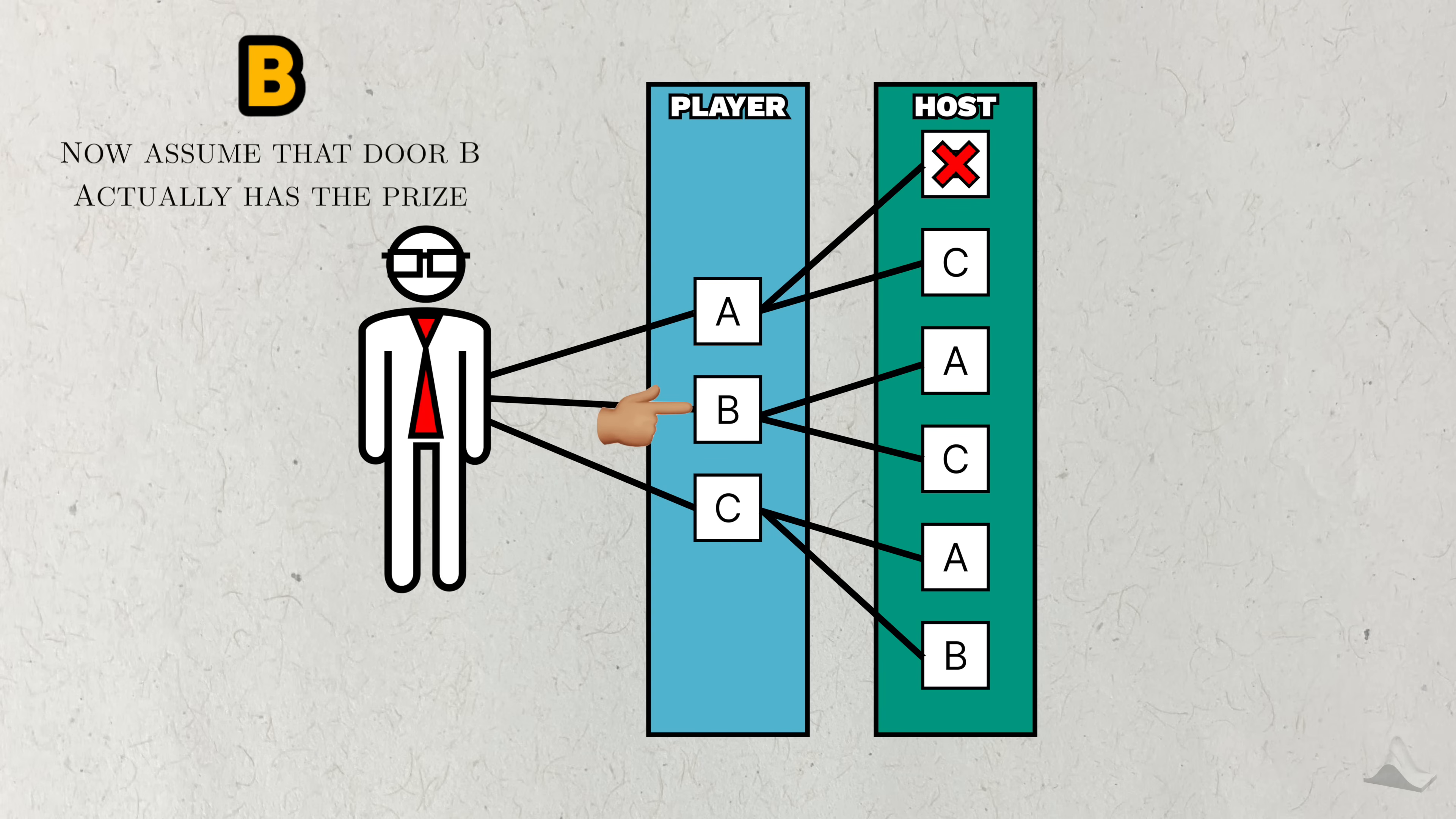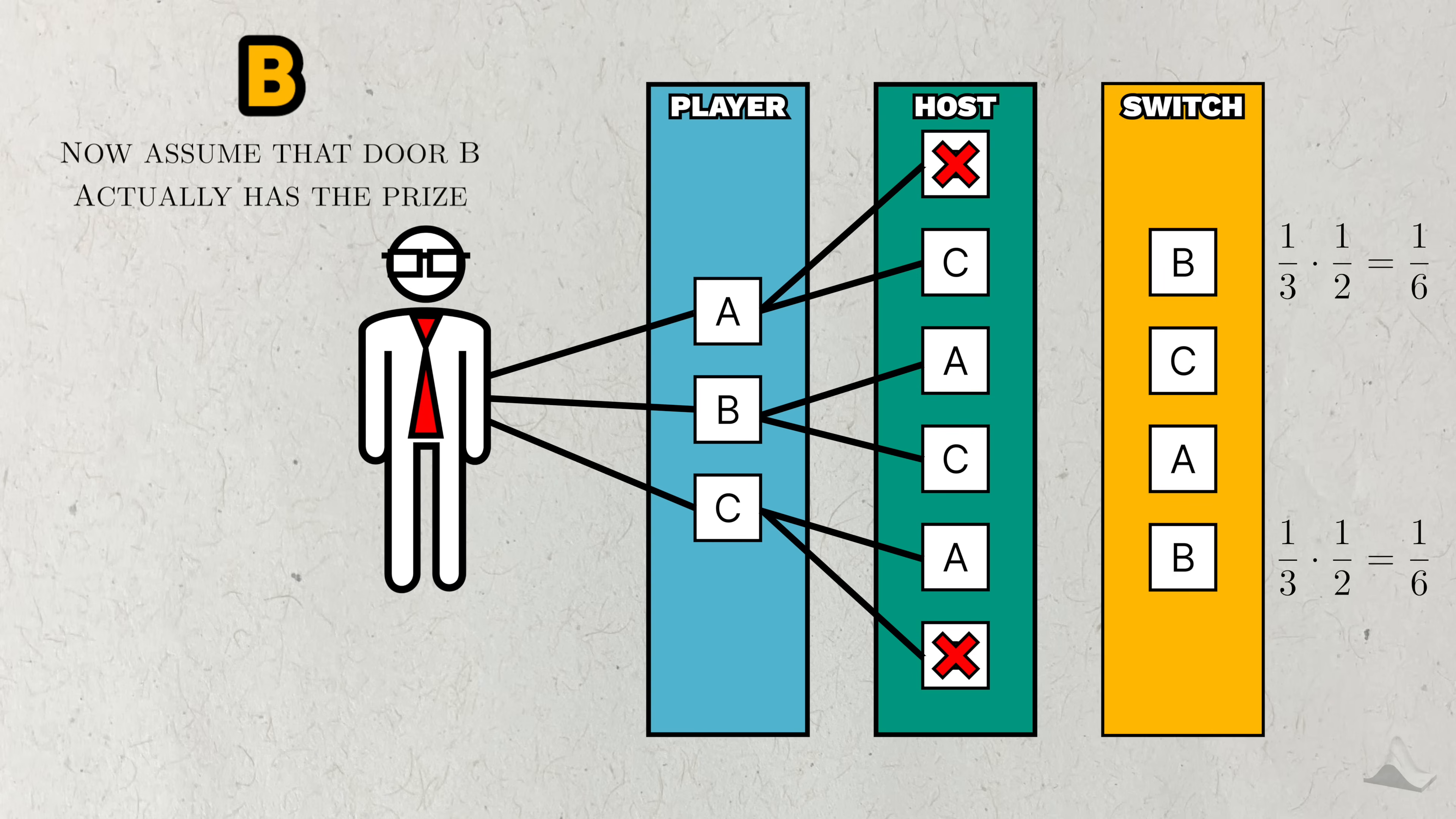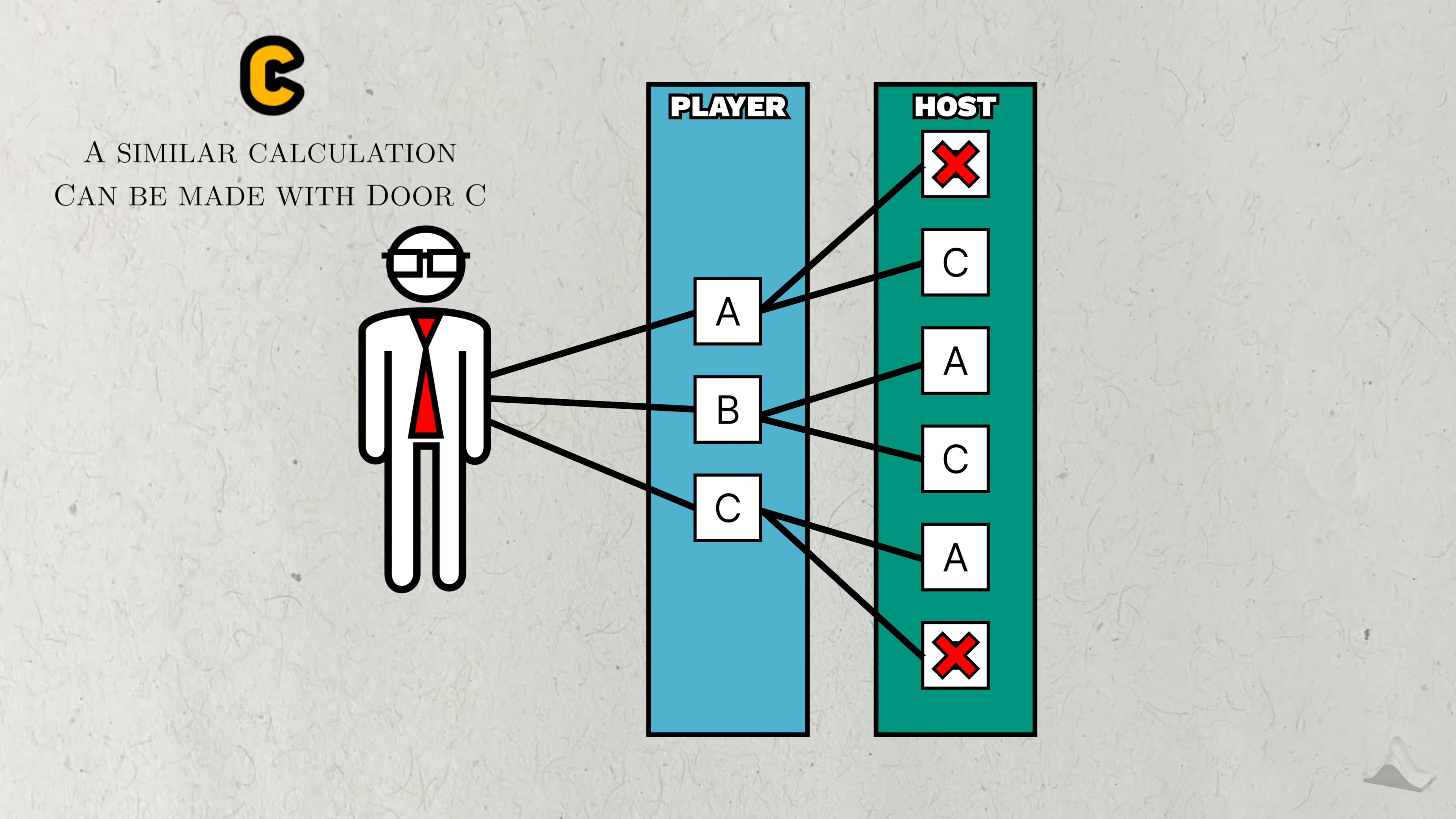But if the player picks B, then the host can pick either A or C. Compared to when the prize was behind A, the paths and path probabilities are still the same, just permuted in different ways. So the probability of winning while switching is still two-thirds. And a similar calculation can be made if the prize is behind door C.